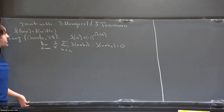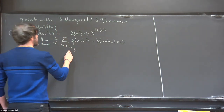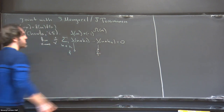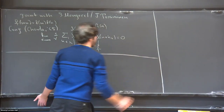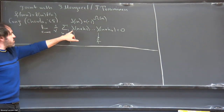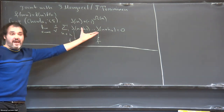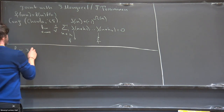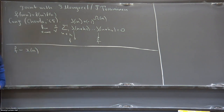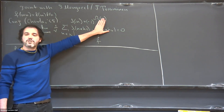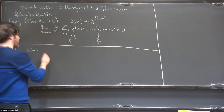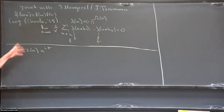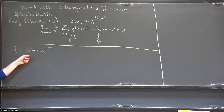My interest today is in the conjecture that generalizes Chowla's conjecture — this is the Elliott conjecture, which wants to replace the function lambda with any bounded multiplicative function. Let me try to understand what the natural obstruction is here. One way this would fail is if f looked like a character, because there is some periodicity and some correlations wouldn't vanish. The standard counterexample is the function n to the i·t.